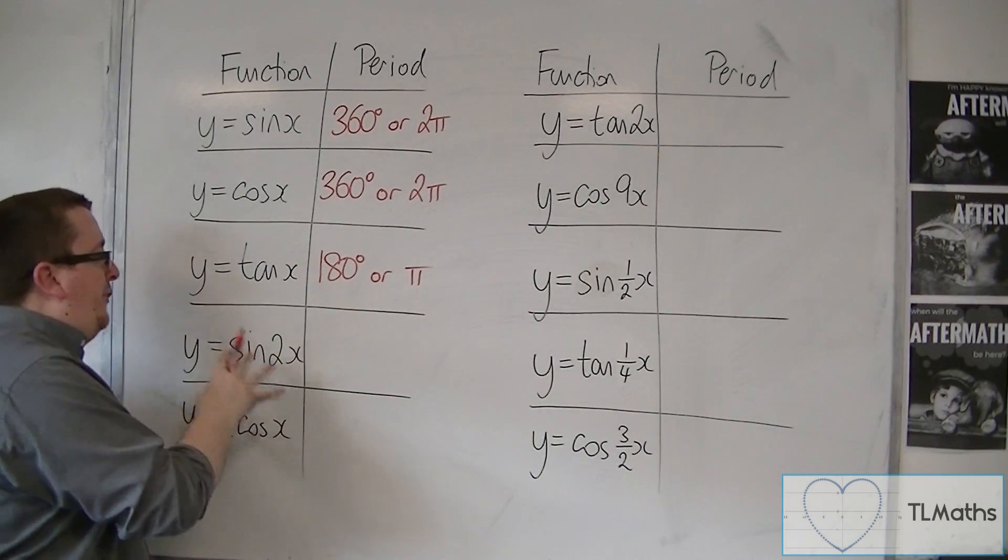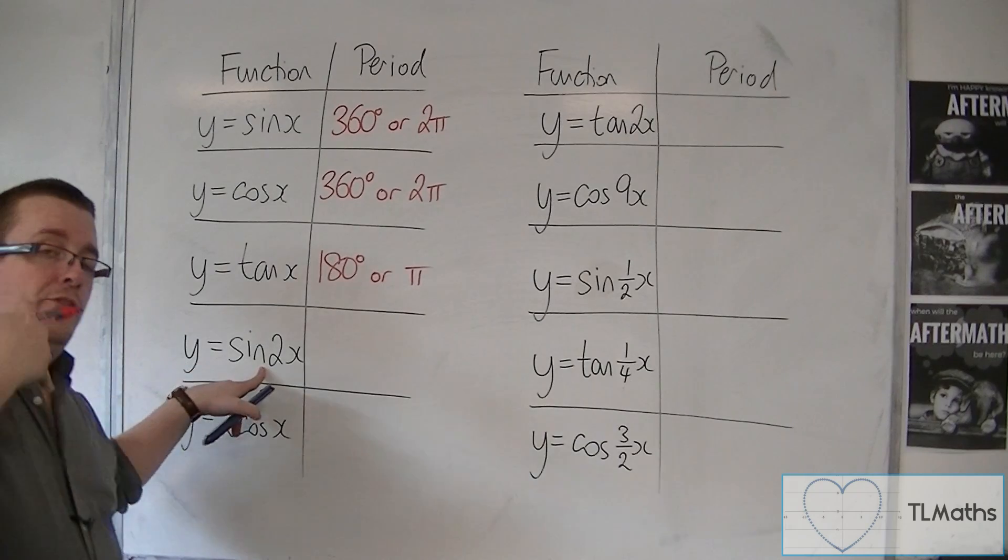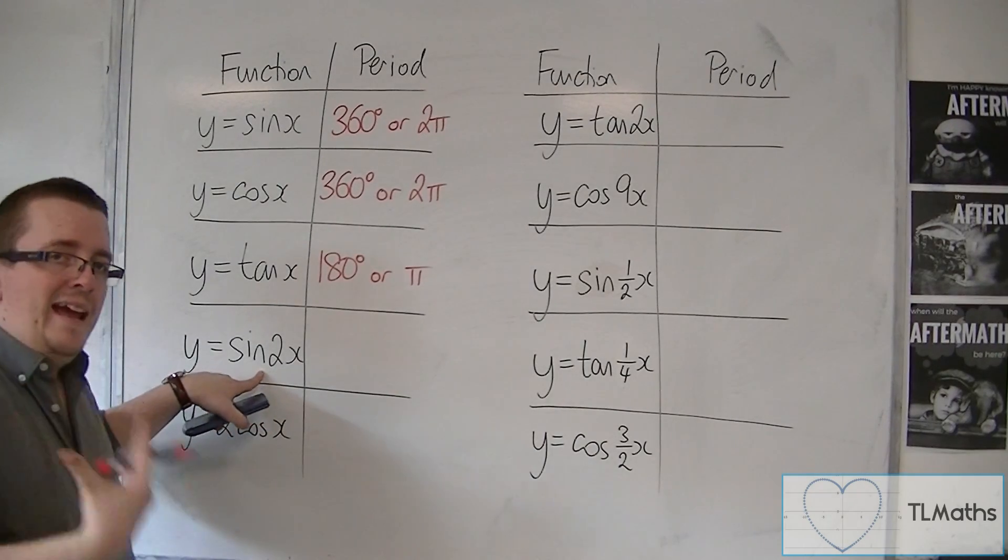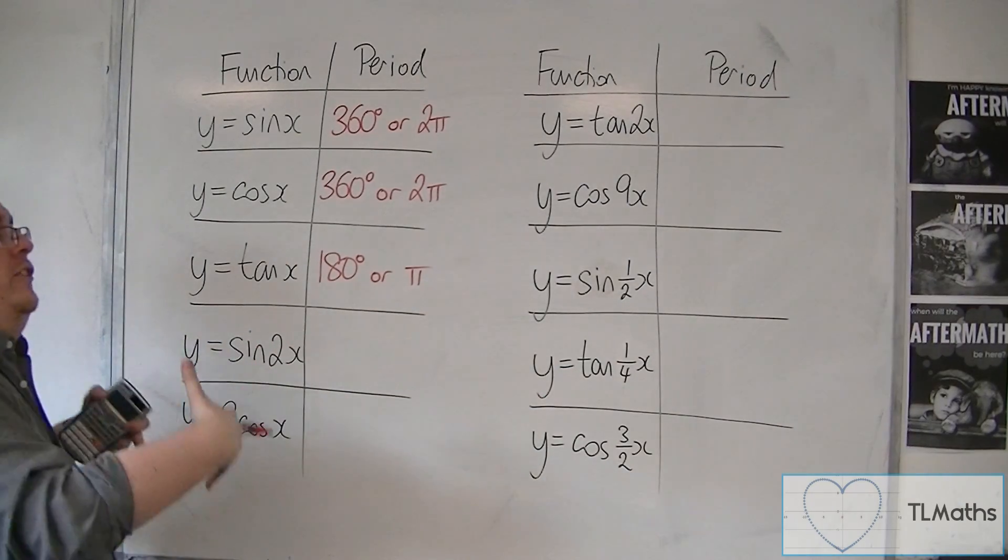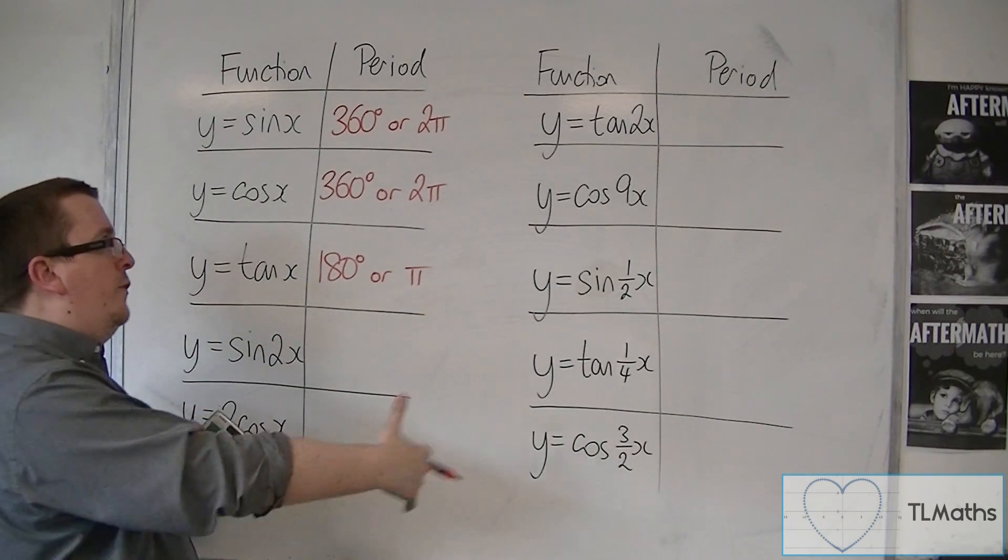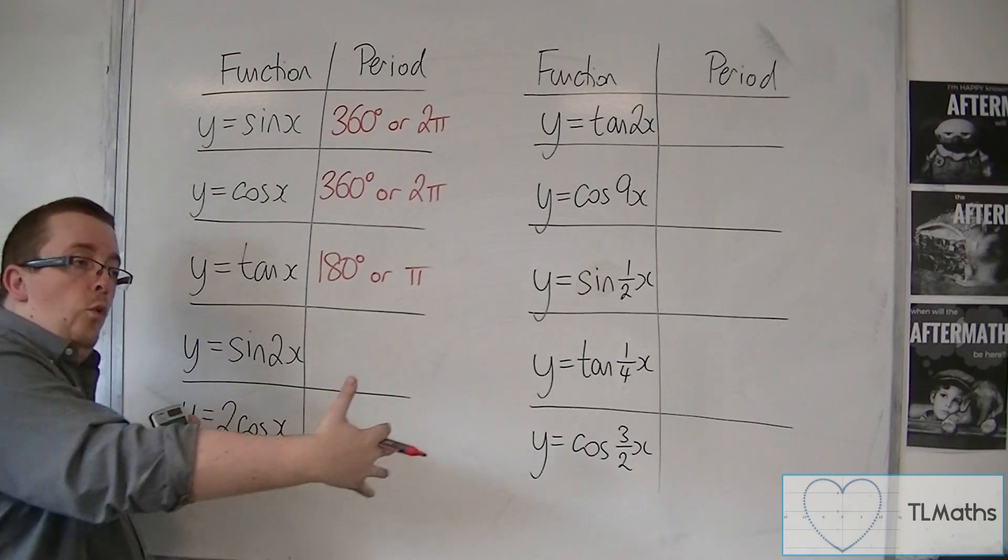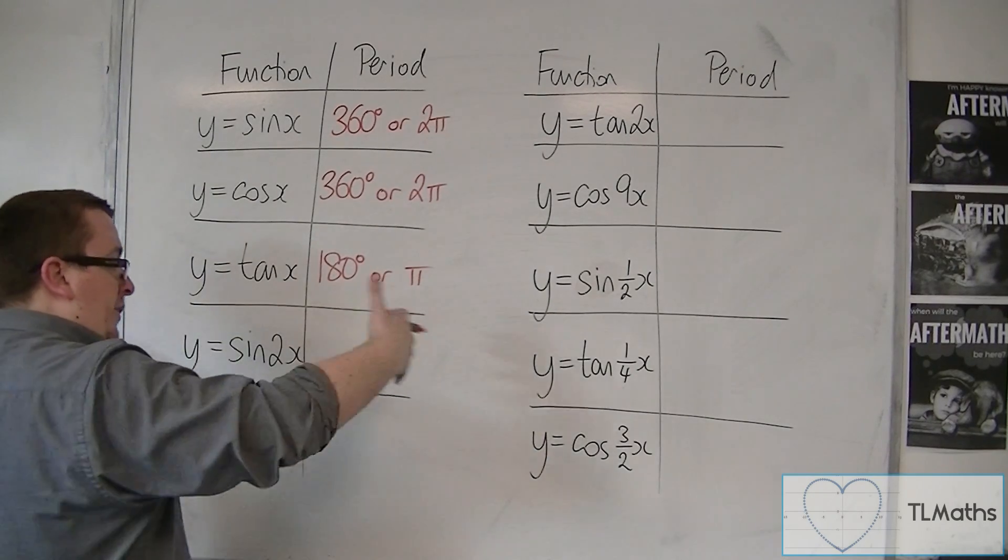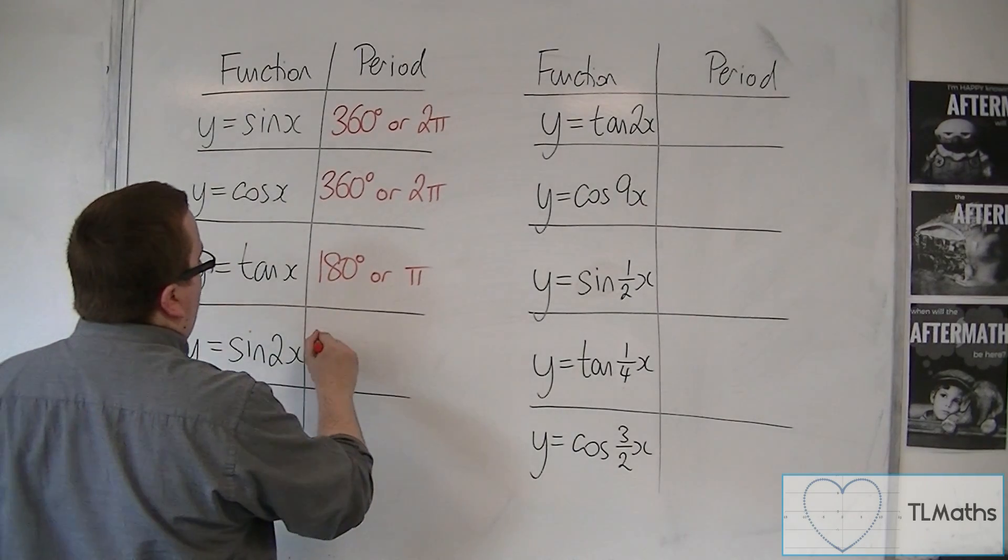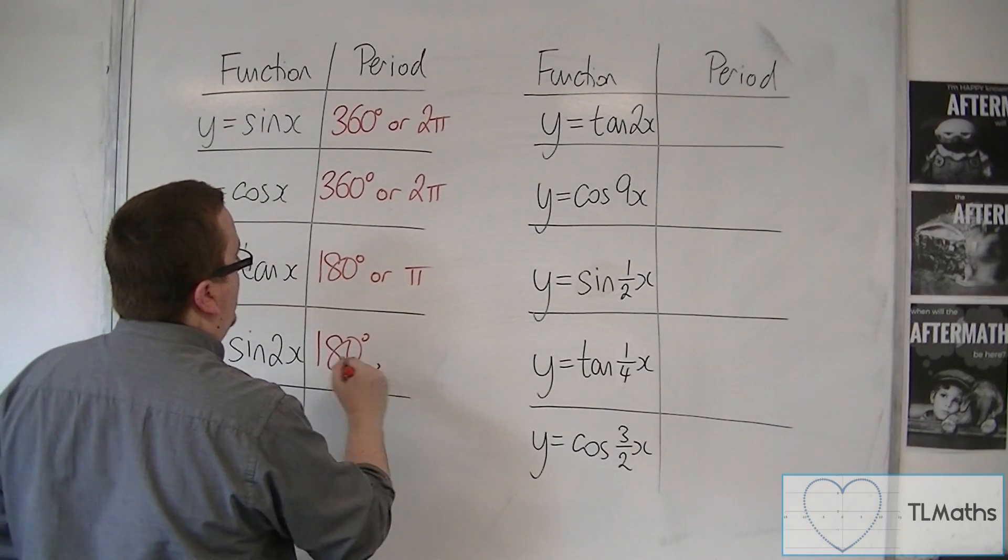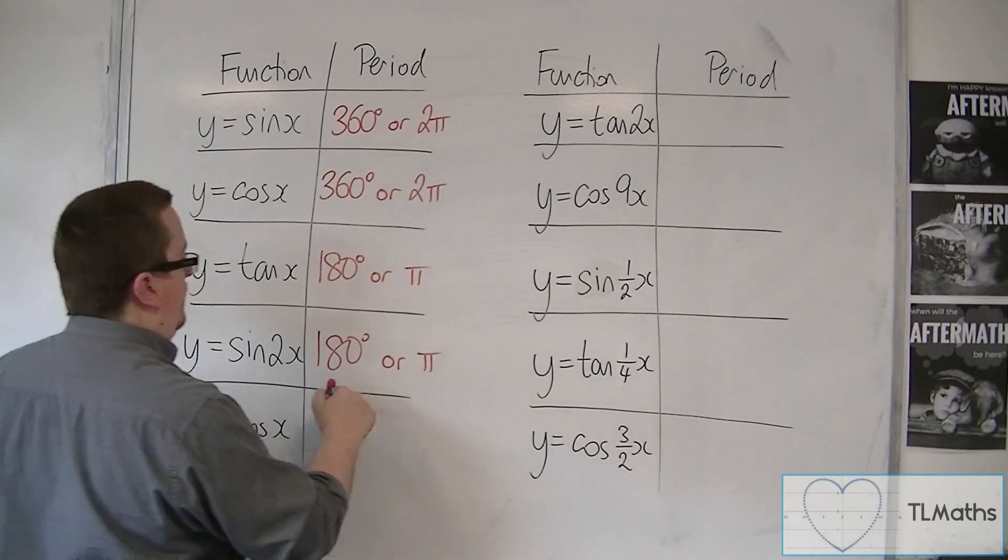Now for y equals sine of 2x, this is a stretch parallel to the x-axis by factor of a half. So it squashes the curve in. So it's now repeating, not over 360, but over 180, because the curve has shortened effectively. So it is repeating every 180 or pi.